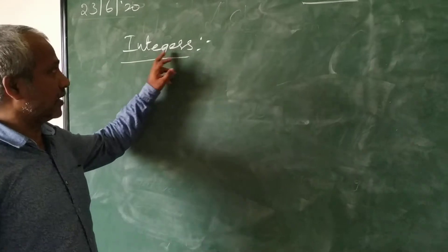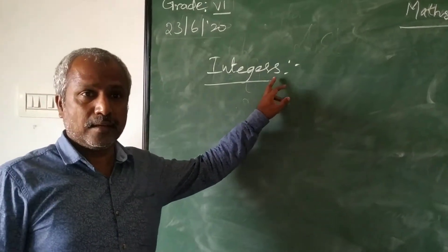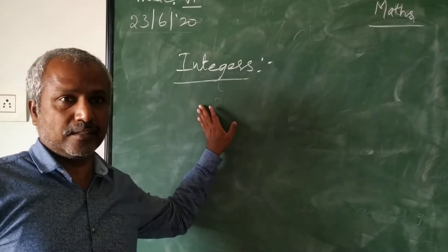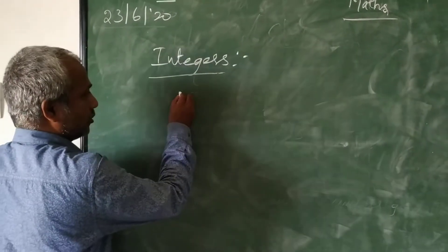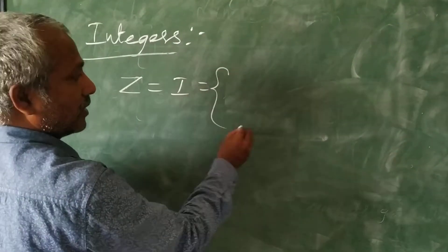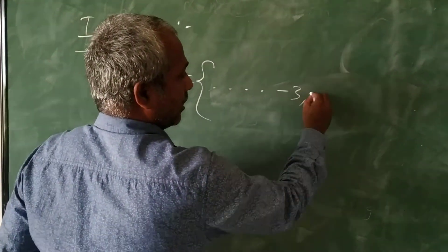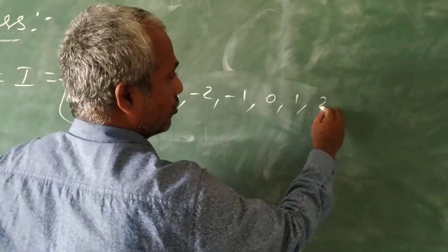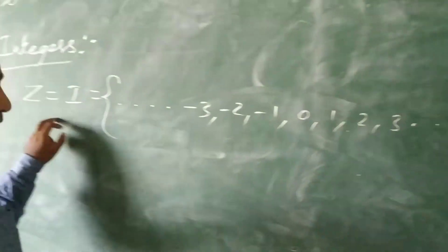Next, we will move to integers. Simply, all numbers with a negative sign — that is called as integers. Integers are generally denoted as Z or otherwise I. That is: ...minus 3, minus 2, minus 1, 0, 1, 2, 3. This is called as integers.